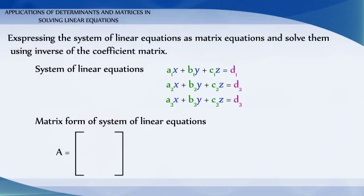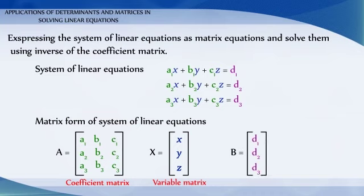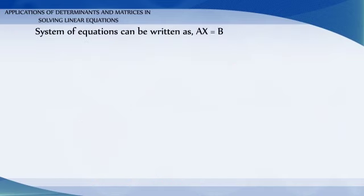This system of equations can be expressed in matrix form as matrix A equals [a1, b1, c1; a2, b2, c2; a3, b3, c3], the coefficient matrix. Matrix X equals [x, y, z], the variable matrix, and matrix B equals [d1, d2, d3], the constant matrix. Then the system of equations can be written as AX equals B.